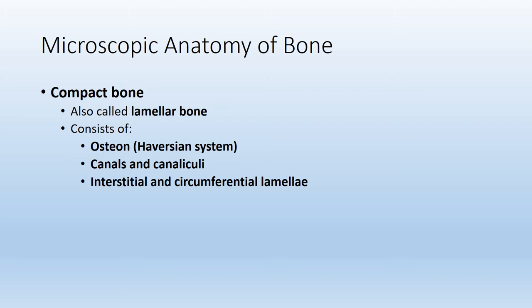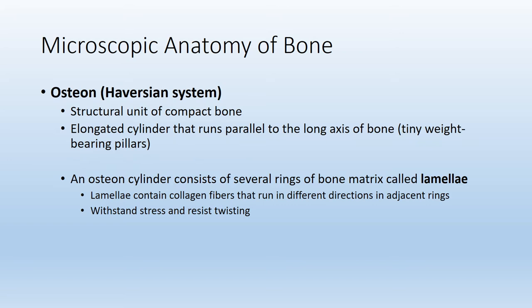When looking at compact bone, you should note it may also be referred to as lamellar bone. Compact bone is the hard external layer that appears solid and smooth, but what's actually going on inside is fairly interesting. Compact bone includes what is known as the osteon, or the Haversian system. We will find lots of canals and canaliculi, or little canals, as well as interstitial and circumferential lamellae. The osteon is the structural unit of compact bone — picture a soup can or elongated cylinder running parallel to the long axis of the bone, with thousands of osteons per bone.